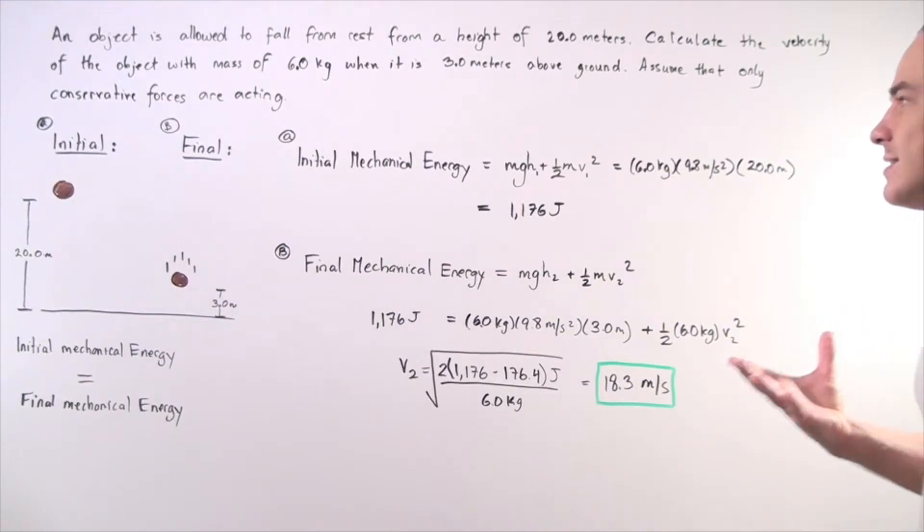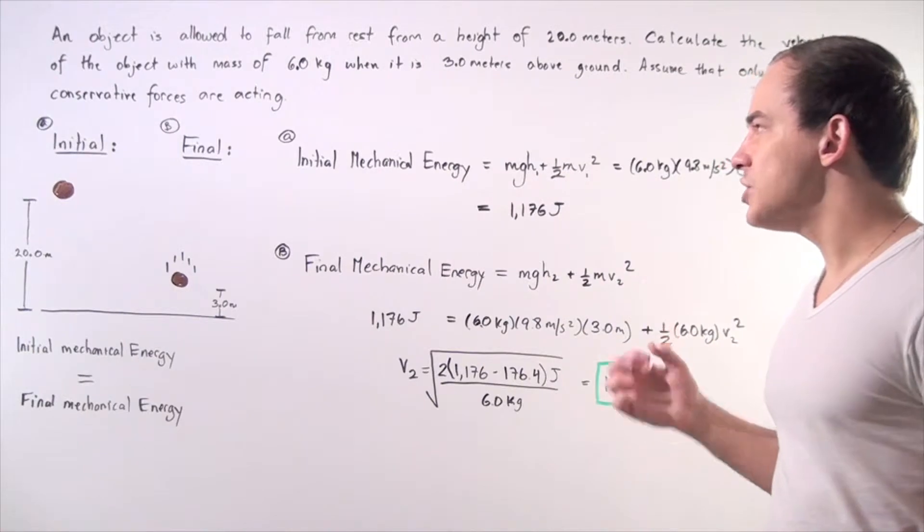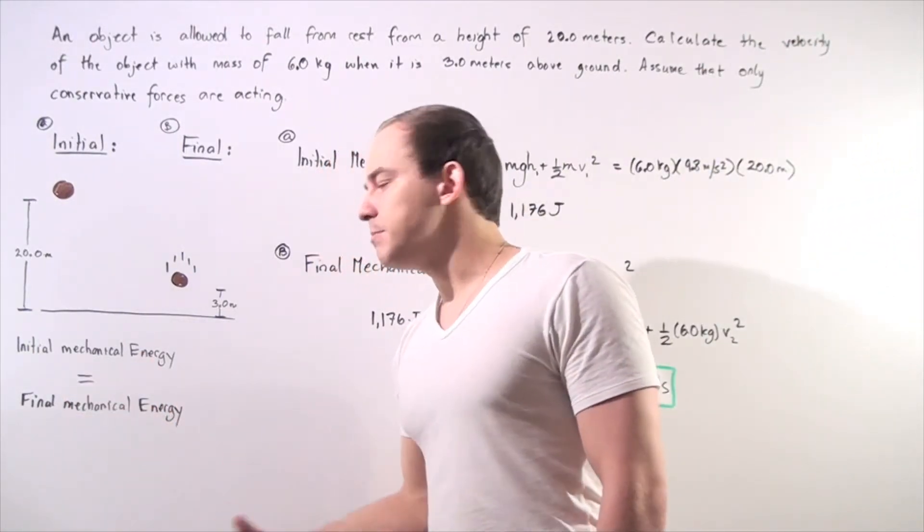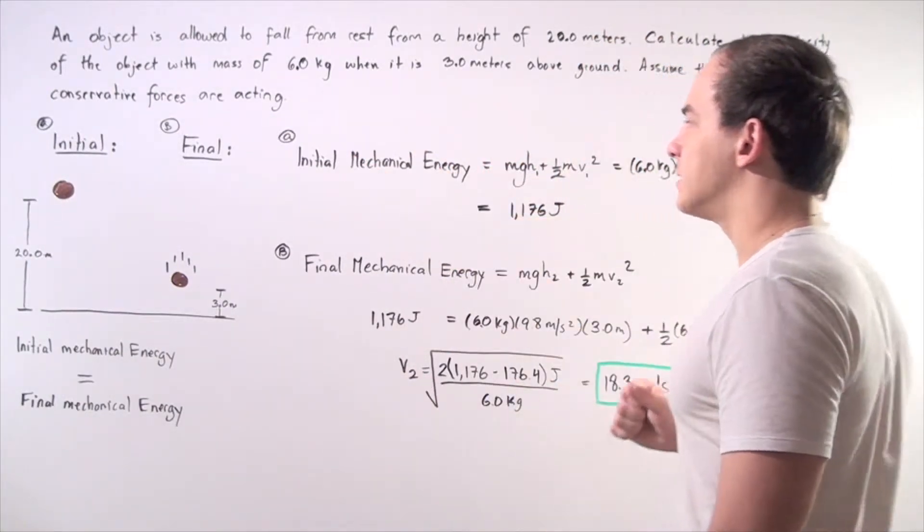So we multiply these values out and we find 1176 joules of energy is our initial mechanical energy. Now this initial mechanical energy is the same exact value as the final mechanical energy because of the conservation of mechanical energy when only conservative forces are acting on the object.